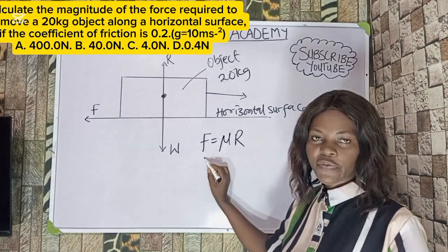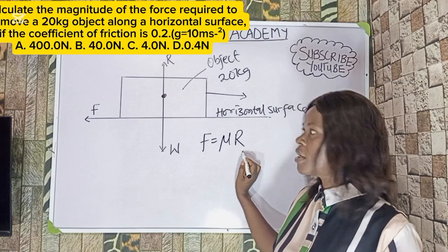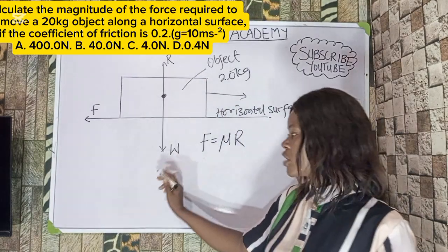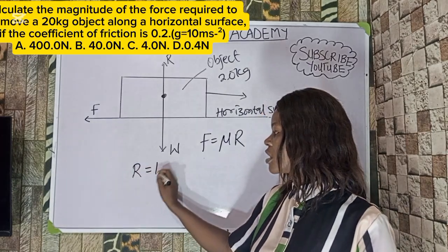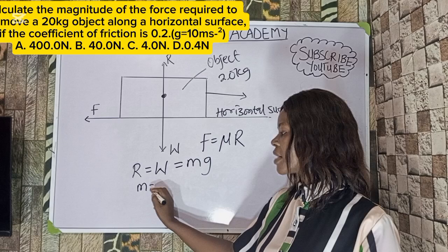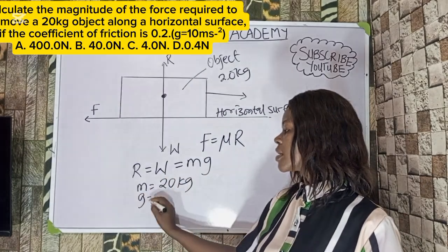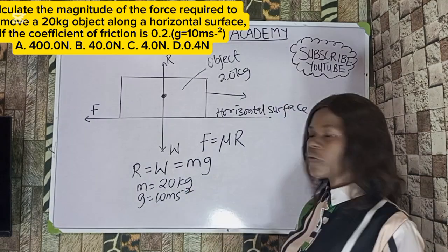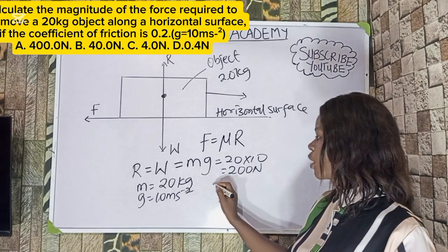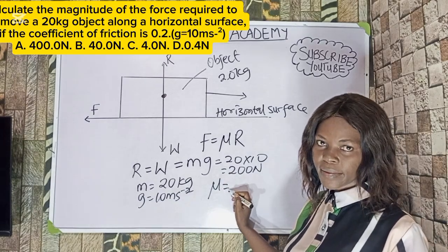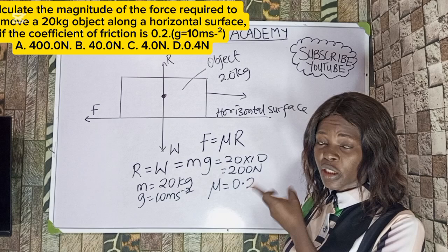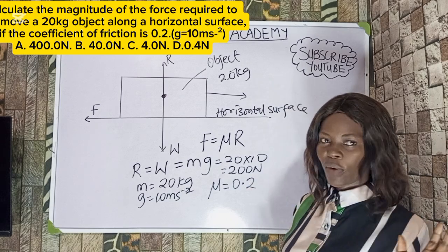Here, F is the frictional force, μ is the coefficient of limiting friction, and R is the normal reaction. The normal reaction is acting upwards while weight acts downwards, and the reaction is equal to the weight. Weight equals mass times acceleration due to gravity. From the equation, mass is 20 kg and g is 10 m/s², so mg equals 20 times 10, which gives 200 N. The coefficient of limiting friction is given as 0.2, and we are looking for the frictional force.